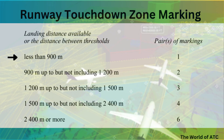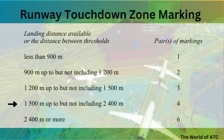For example, if the landing distance available is less than 900 meters, there would be only one pair of markings. If it is up to 1200 meters, the marking pairs would be 2. If the landing distance available is up to 1500 meters, there will be three pairs of markings, and if the landing distance available is up to 2400 meters, the pairs of markings would be 4.